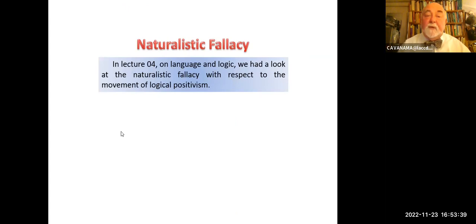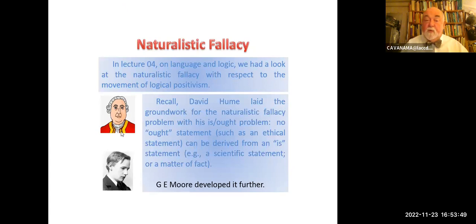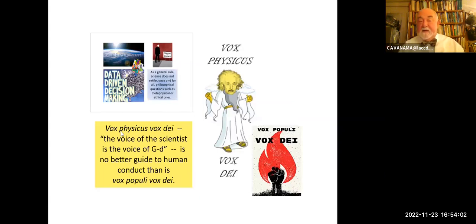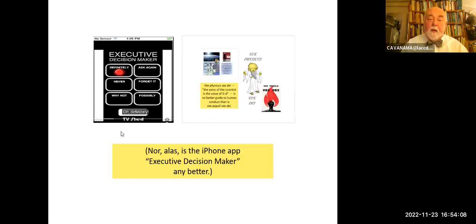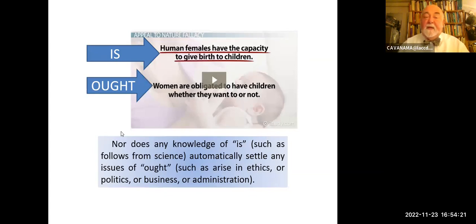We took a look at this in the fourth lecture on language and logic with respect to logical positivism. Recall, David Hume had laid the groundwork for the naturalistic fallacy with his is-ought problem, and G. E. Moore developed it further in the 20th century. The general rule: science does not settle once and for all philosophical questions such as metaphysical or ethical ones. The voice of scientists is no better guide to human conduct than anyone else's. Nor can iPhone app executives make it better. Remember that computer Deep Thought and the discovery of the meaning of it all? It was 42. Knowledge of is — such as science — does not automatically settle any issues of ought.